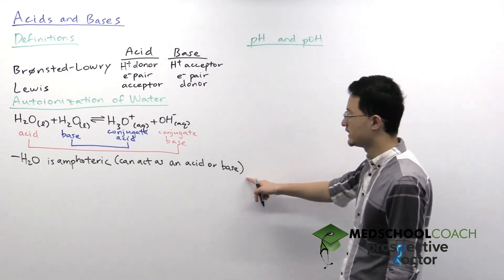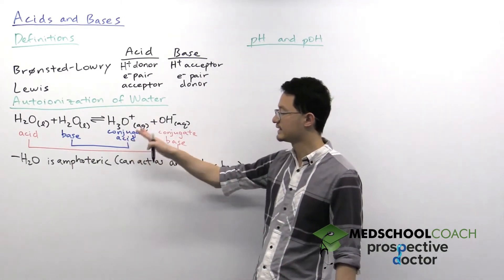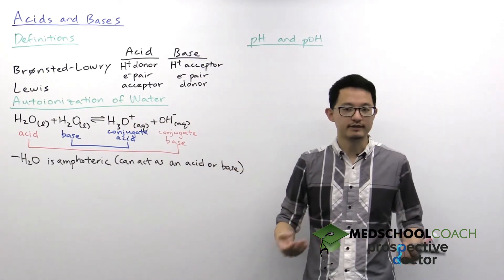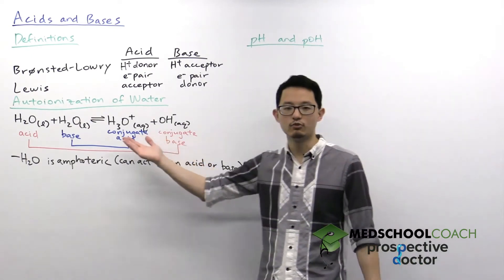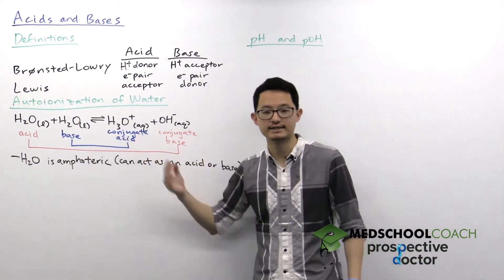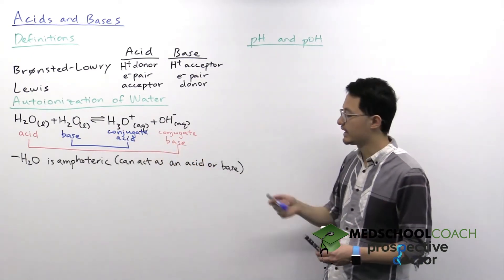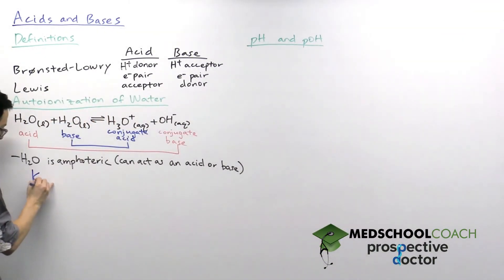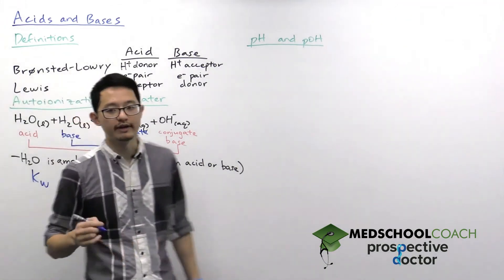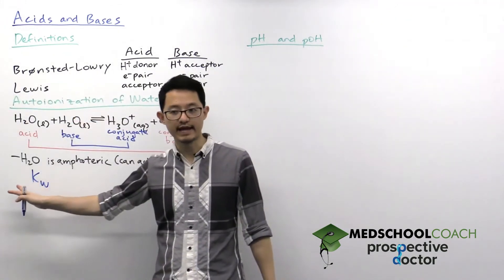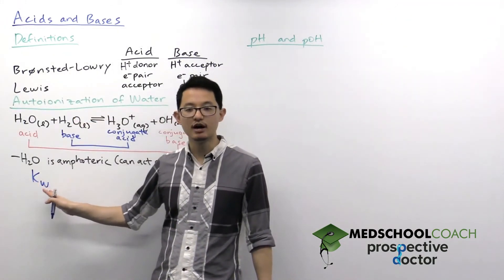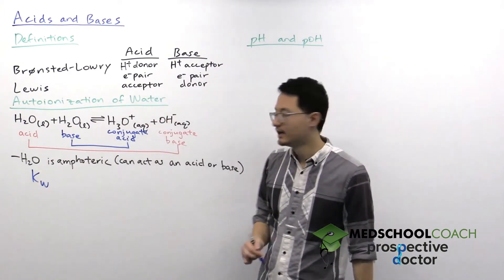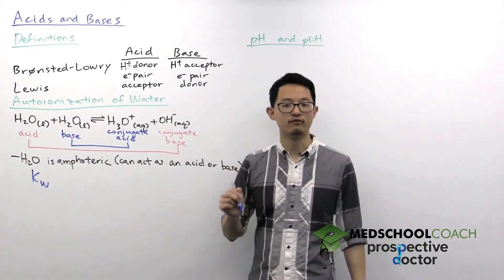So now we know that water spontaneously forms the hydronium ion and hydroxide ion in solution. One thing we are interested in is to what degree. How much ionization actually occurs? And we can figure this out if we take a look at the equilibrium constant for this reaction. And you'll recall equilibrium constant is capital K. And here we have a W subscript, just so we know that this is specifically the equilibrium constant for the auto-ionization of water.